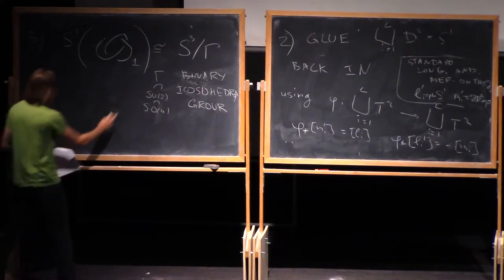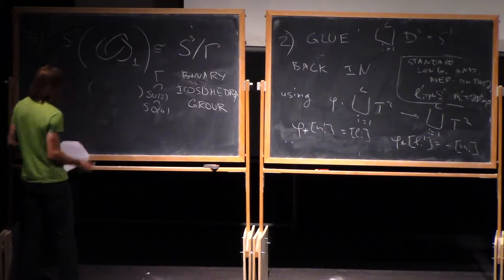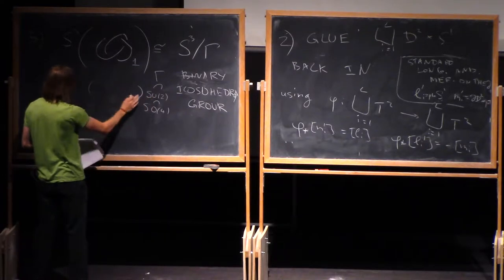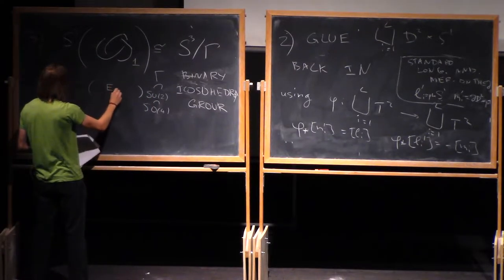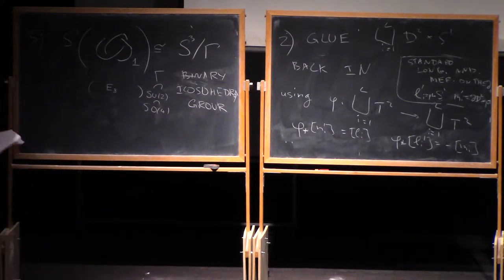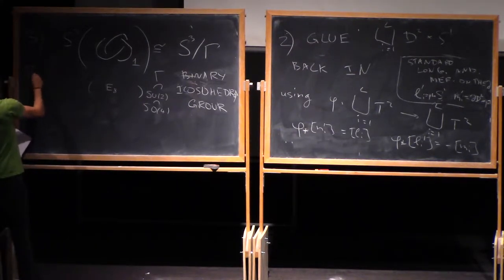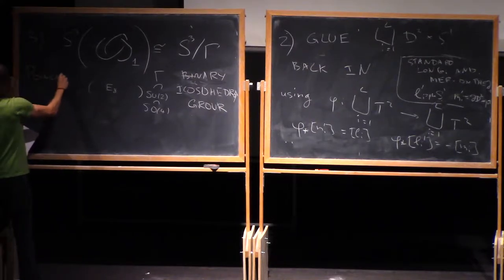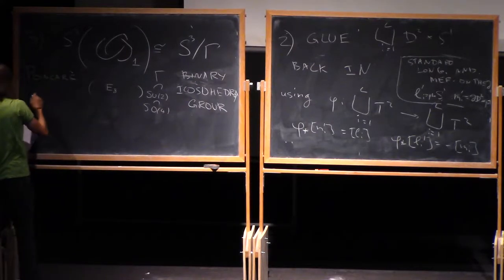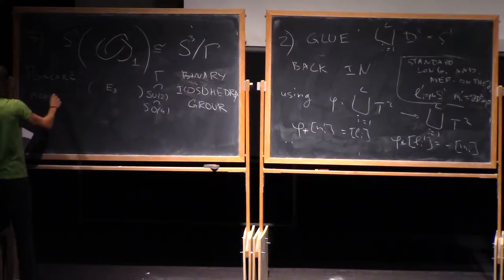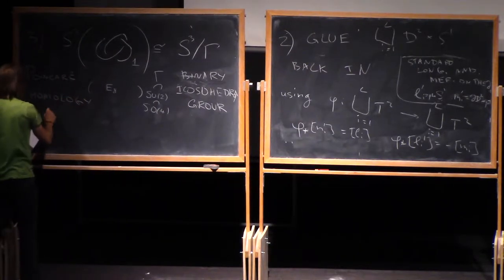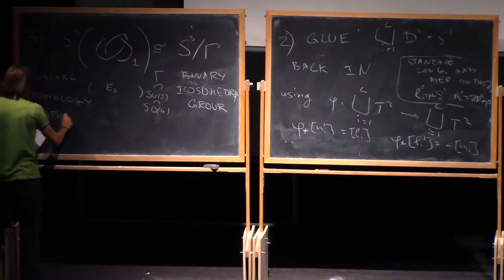And for those familiar with the classification of subgroups in SU2, which is given by ADE, this is a subgroup which corresponds to E8 in ADE classification. And this manifold is also known as Poincaré homology sphere.